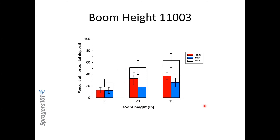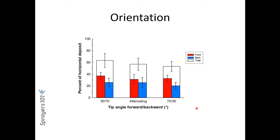At different travel speeds (approximately 5 and 10 mph), we found no significant effect of travel speed in that range — very similar deposition amounts. Boom height strongly corroborated previous work: at 30, 20, and 15 inches, halving the boom height essentially doubled or more the deposition on the wheat head — one of the most significant and consistent results we've found. Different nozzle orientations (30 forward/70 backward, 70 forward/30 backward, alternating as in the TADF) showed no significant differences between orientations.